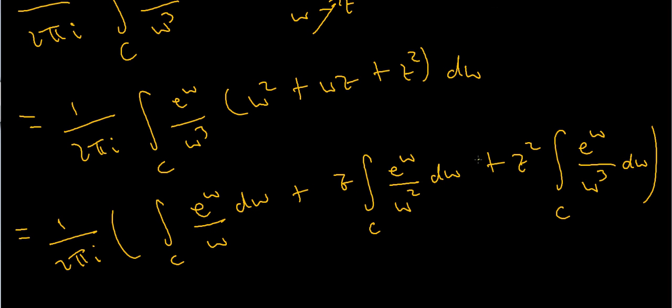Now at this point I could just use the residue theorem, because clearly I've got poles of order 1, of order 2, and of order 3, all at the origin, and they all clearly lie inside the circle. But I'm not going to do that, especially as it means I'm going to have to compute all of these residues individually. A much quicker way is actually just to use Cauchy's integral formula.